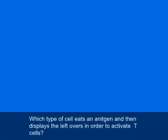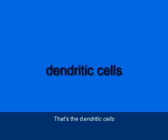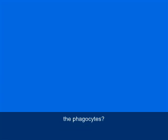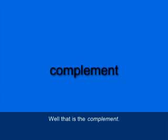Which type of cell eats an antigen then displays the leftovers in order to activate T-cells? That's the dendritic cells. What is the term for a protein that circulates in an inactive state but when it encounters an antigen, marks it for destruction by the phagocytes? That's the complement.